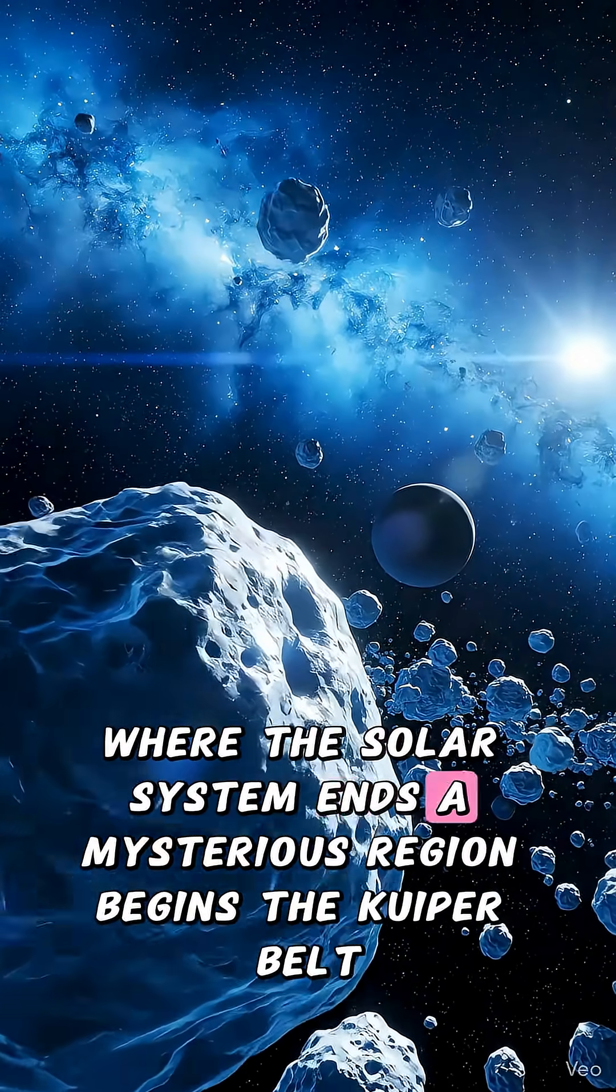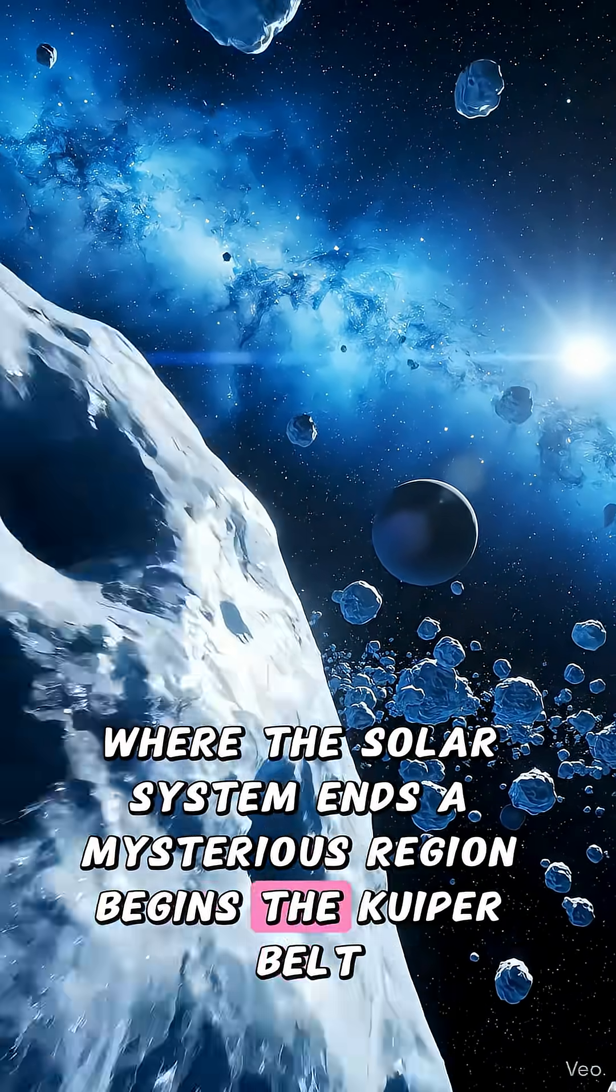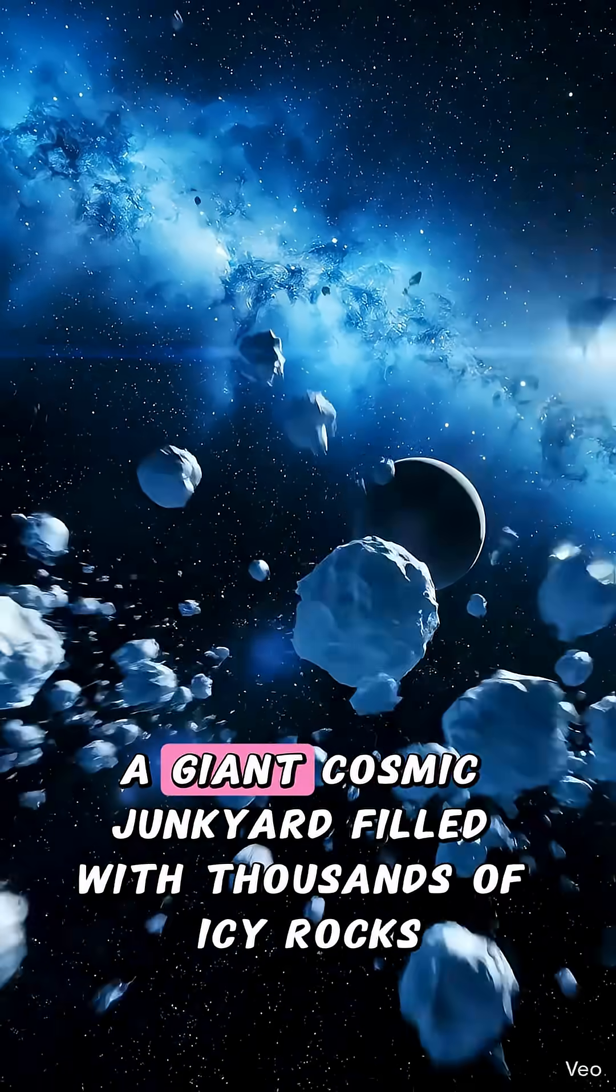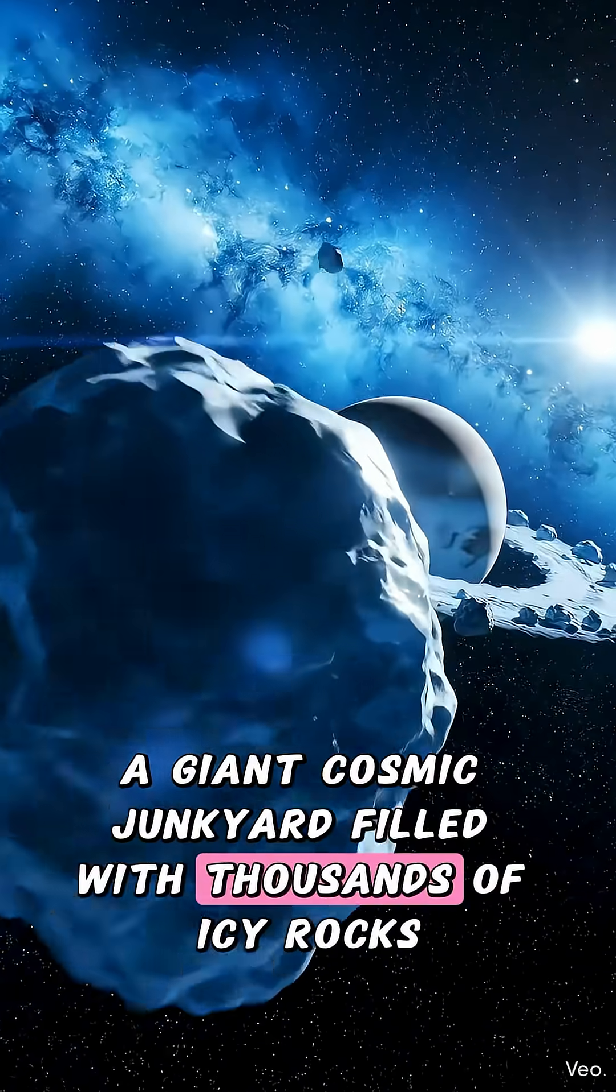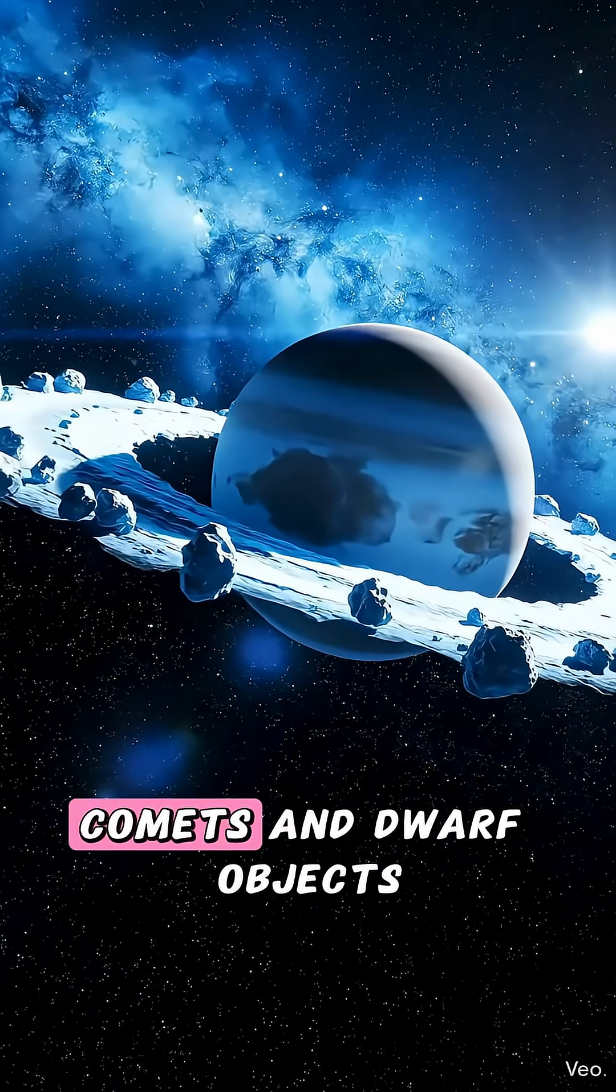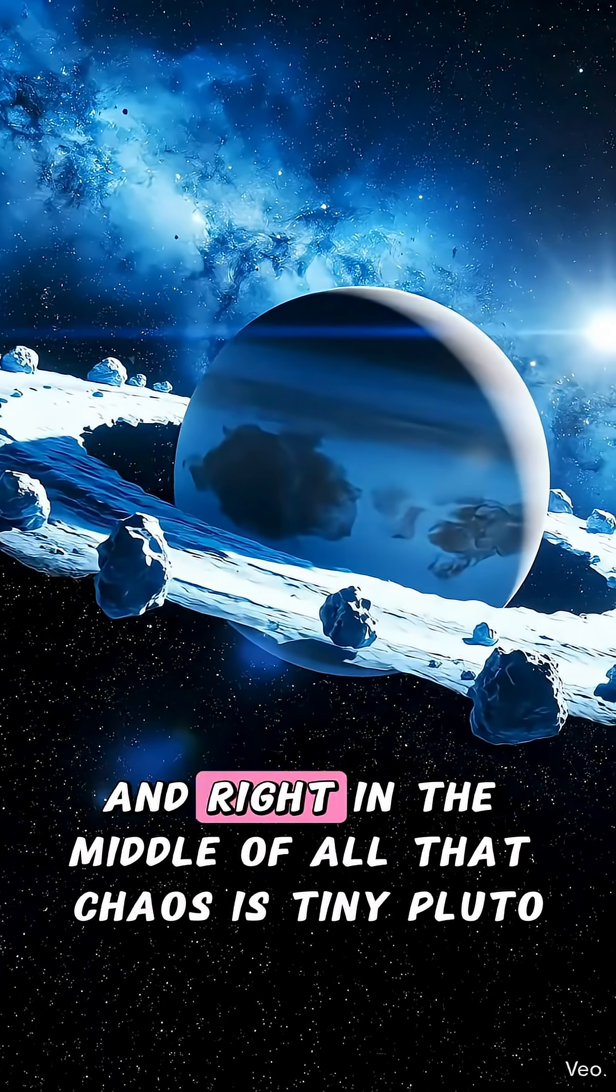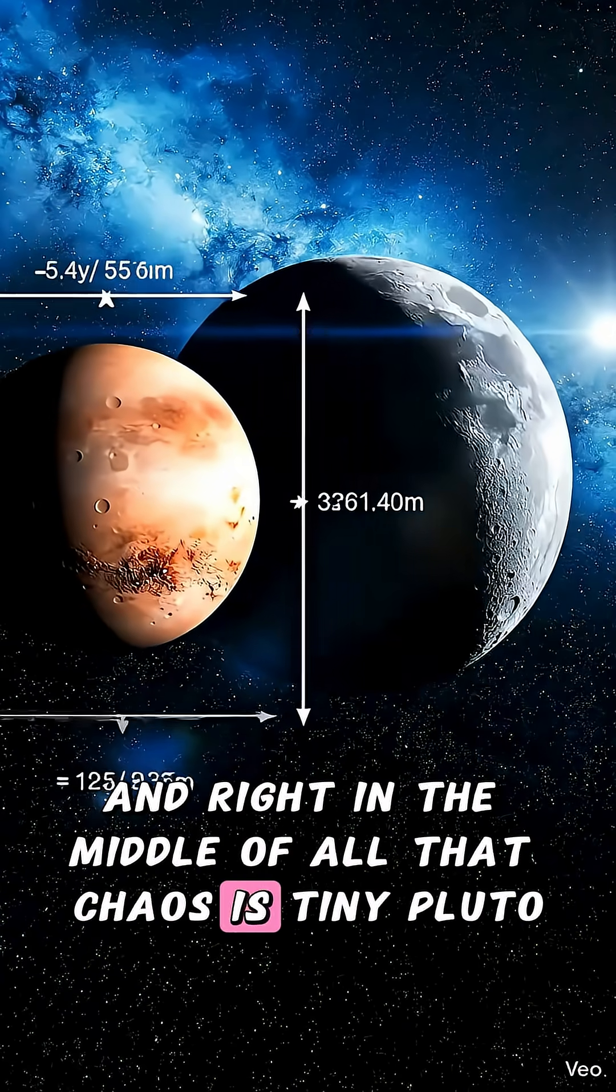Where the solar system ends, a mysterious region begins. The Kuiper Belt. A giant cosmic junkyard filled with thousands of icy rocks, comets, and dwarf objects. And right in the middle of all that chaos is tiny Pluto.